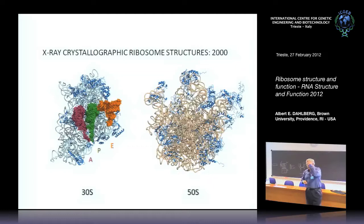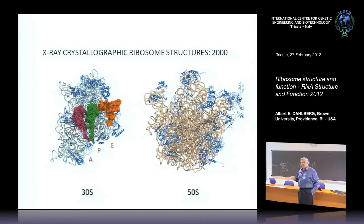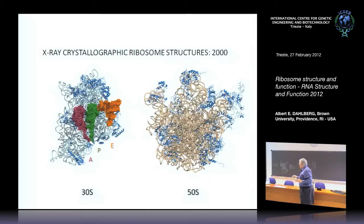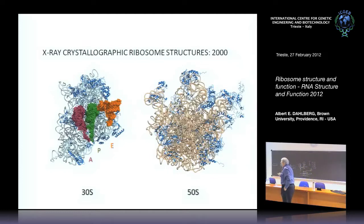Now I'll give you some crystal structure data showing where things are relative to one another. These are crystal structures of the 30S and 50S. I've taken the two subunits and opened them up so you're looking at the interface side—the interface is where the tRNA fits, since tRNA spans between the two subunits. Here is where the A, P, and E site tRNAs are on the 30S subunit, and the message is right behind them, with the anticodon parts base pairing to the messenger RNA.